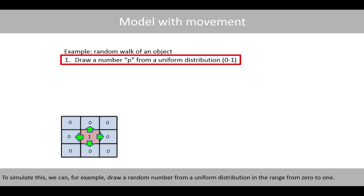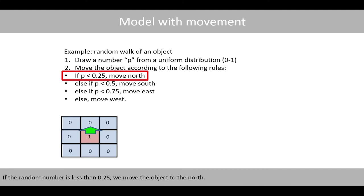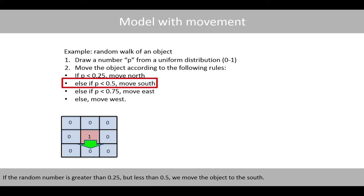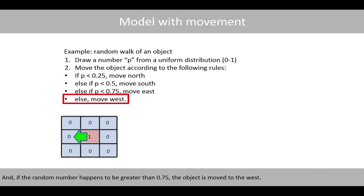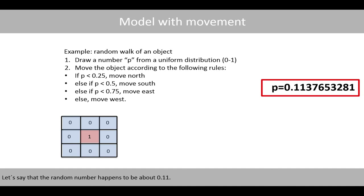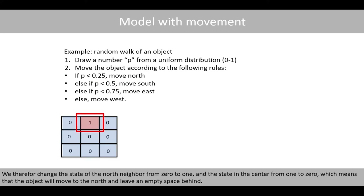To simulate this, we draw a random number from a uniform distribution in the range from 0 to 1 and move the object according to the following rules. If the random number is less than 0.5, we move the object to the north. If it is greater than 0.5 but less than 0.75, we move the object to the east. If it is greater than 0.75, the object is moved to the west. For example, if the random number is about 0.11, we move the object to the north, changing the north neighbor's state from 0 to 1 and the center from 1 to 0.